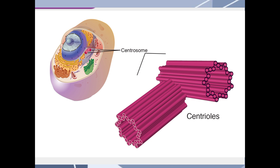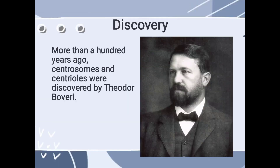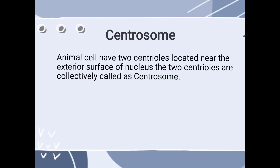Discovered more than a hundred years ago, centrosome and centrioles were discovered by a physician known as Theodore Boveri. Now, what are centrosomes? Animal cells have two centrioles located near the exterior surface of the nucleus.